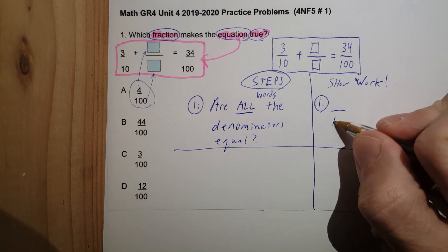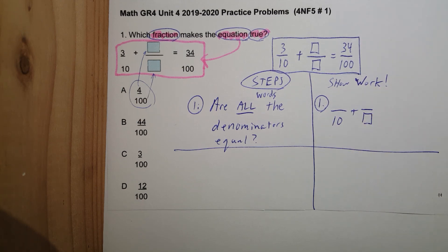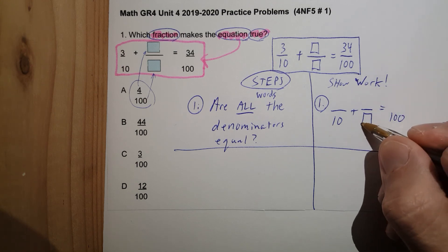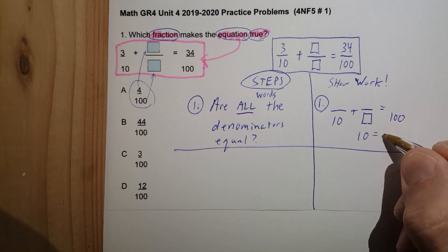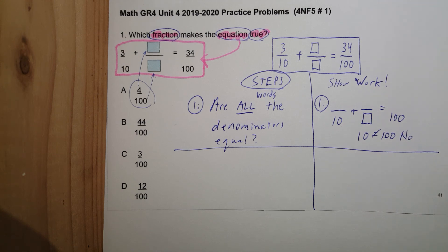Well, let's see. I have ten plus unknown number is equal to one hundred. Ten is not equal to one hundred. So, no. All right.